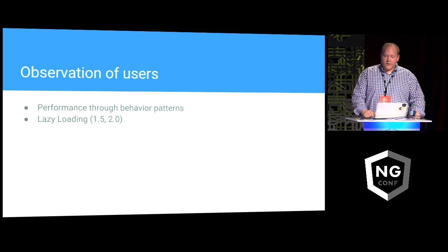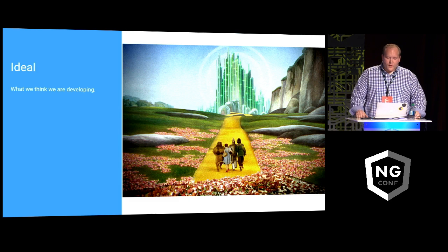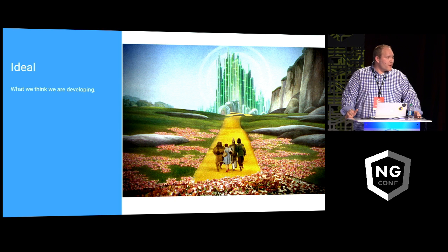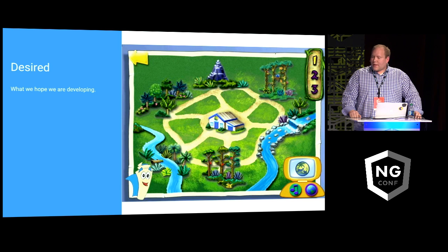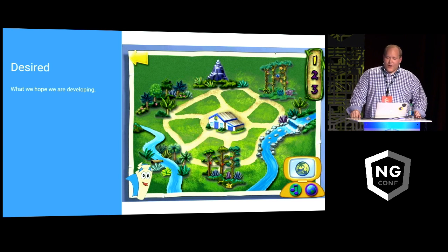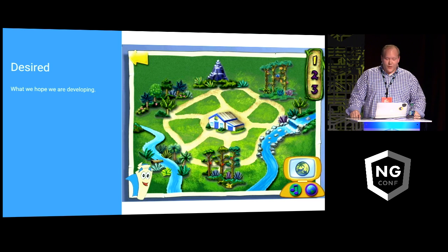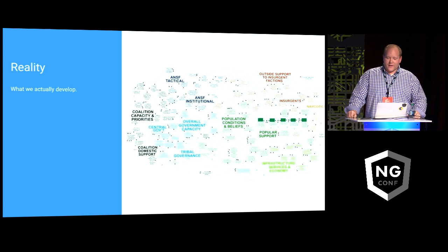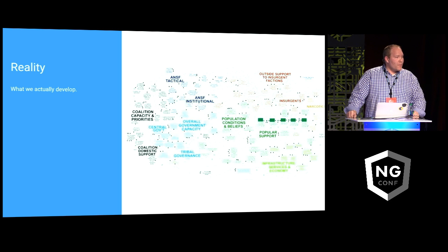Now let's talk about some non-traditional ways to measure performance. When we create applications, we have this wonderful vision — just follow the yellow brick road. We know what's best for our users and how they need to get to the value. But life happens — sometimes our applications get a little more complicated. We hope this complication leads us to something like Dora: they can still navigate, it's just a bit more complicated. But reality is more scary — over years, our application evolves from a yellow brick road to hopping from meatball to meatball in a bowl of spaghetti.